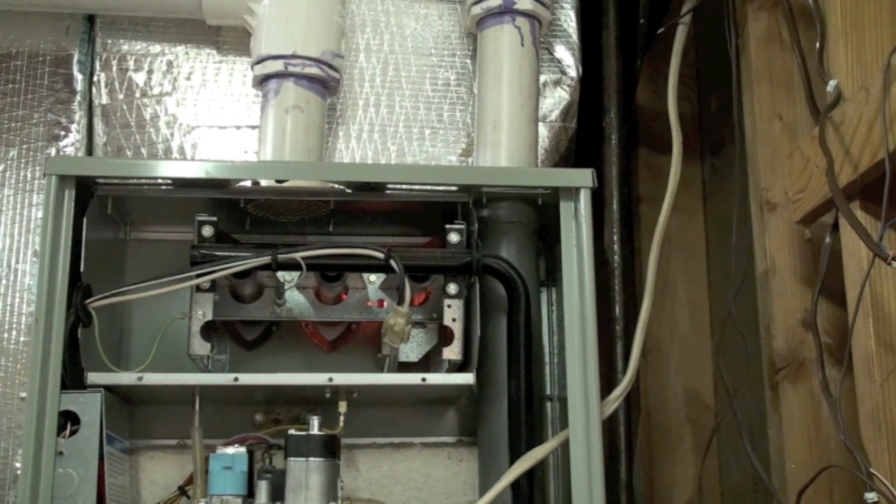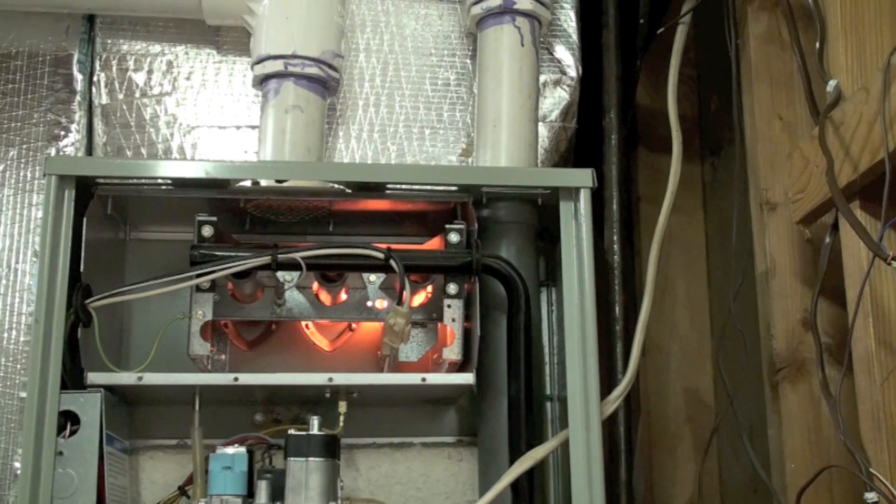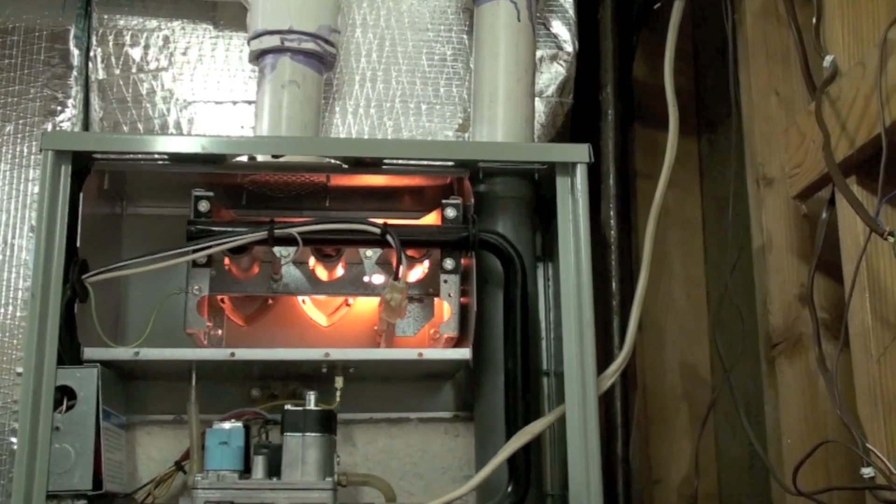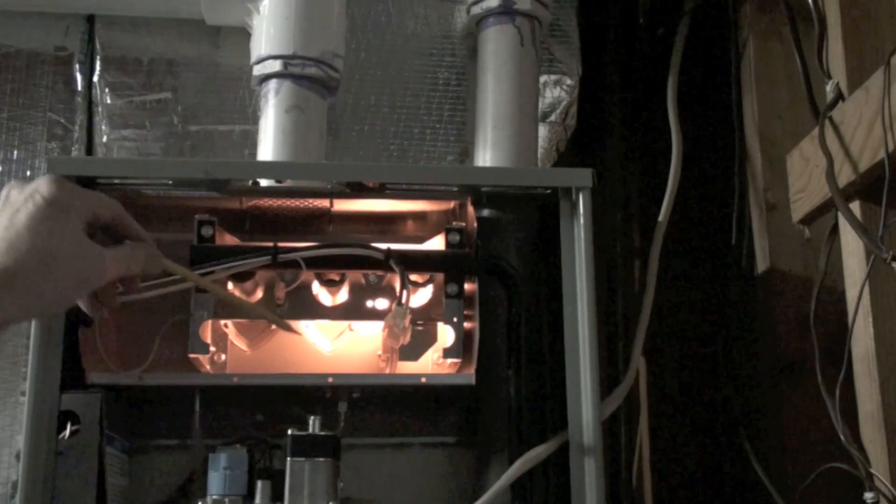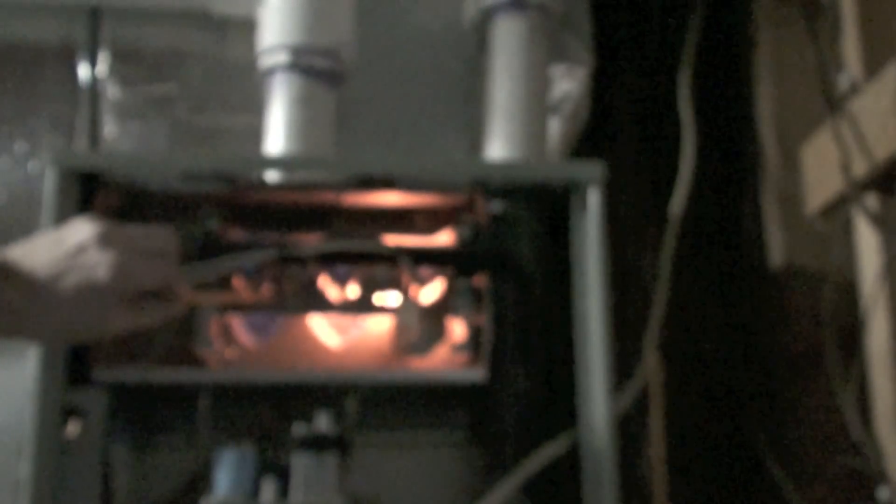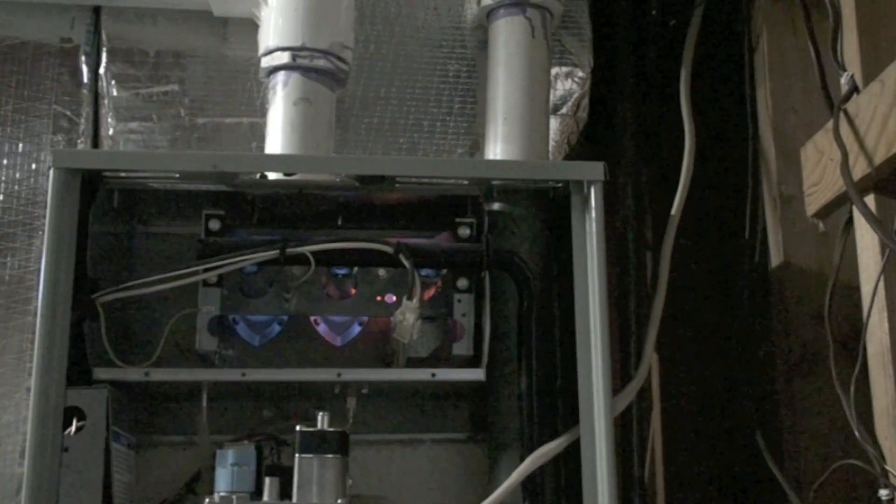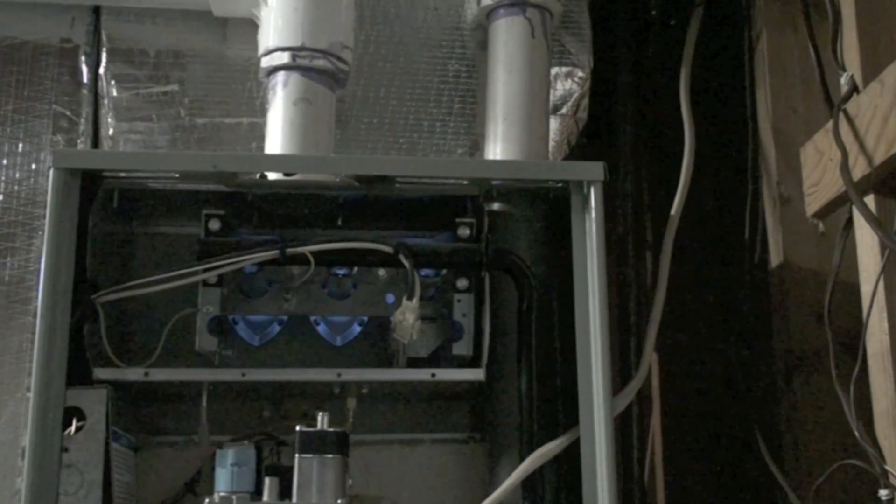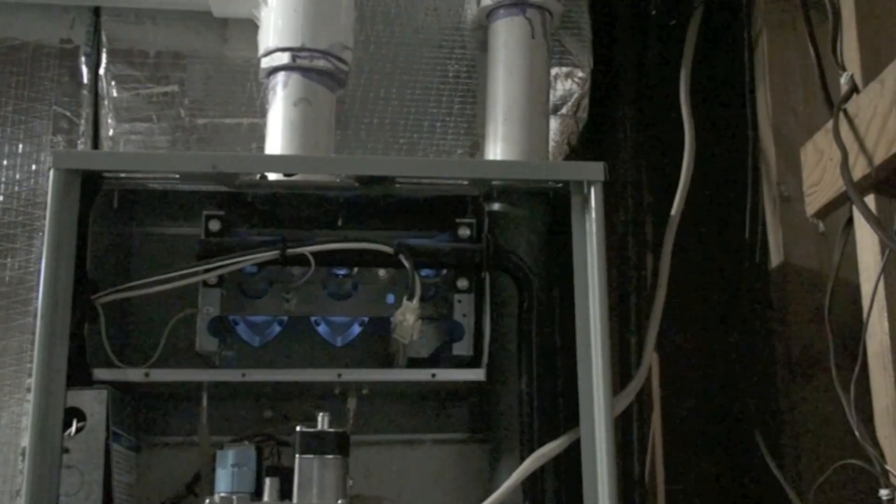Okay, this video is on the flame sensing rod. I've just fired this furnace up. The hot surface igniter is right here, that's the glow stick. These are the burners, there's three of them. Right here is the flame sense rod. Now the flame sense rod is nothing but a piece of stainless steel, there's nothing special about it. It doesn't perform any function other than conduct electricity.